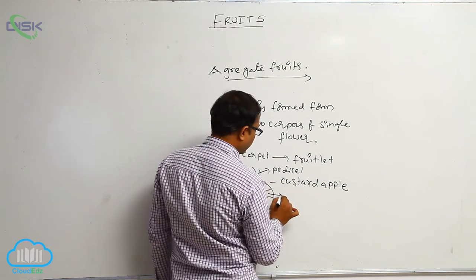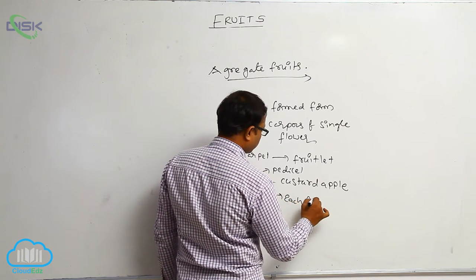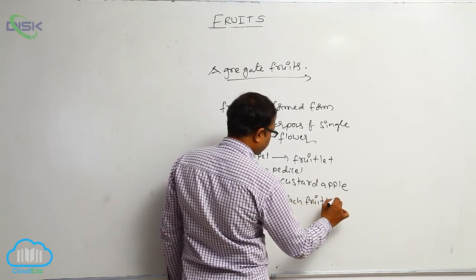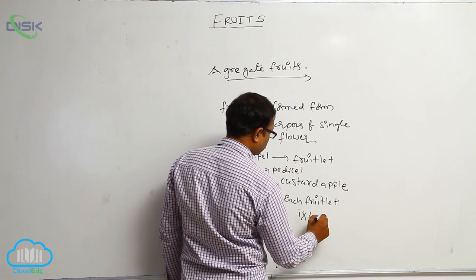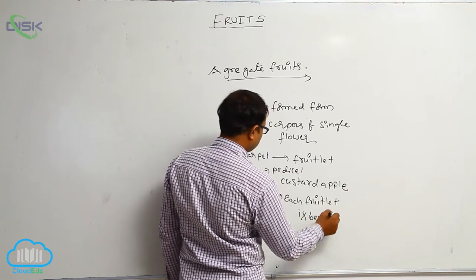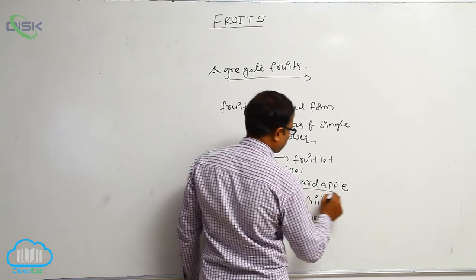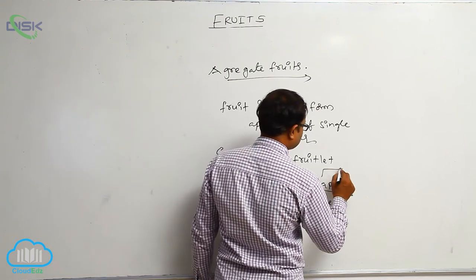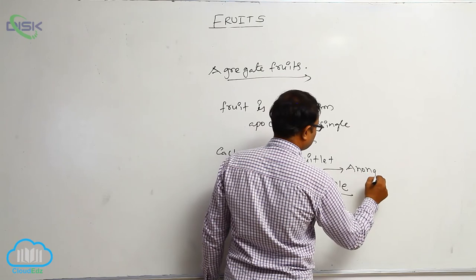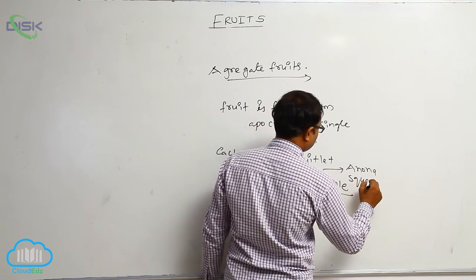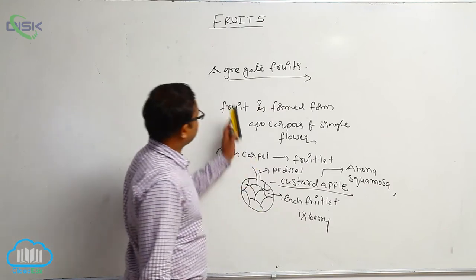Each fruitlet is berry. So that is known as custard apple. Scientific name: Annona squamosa.